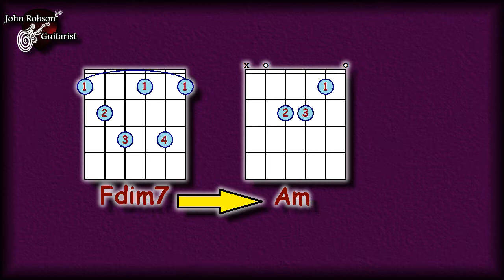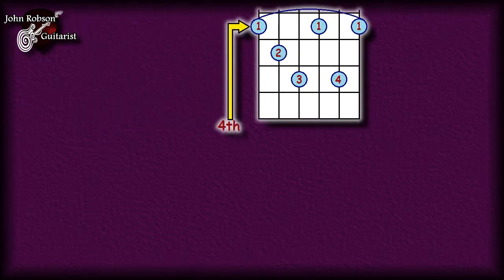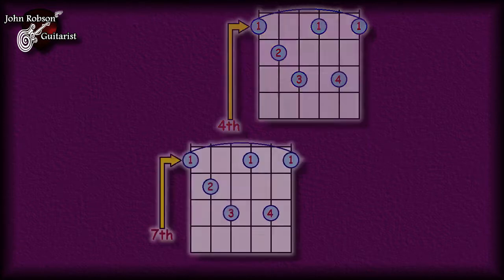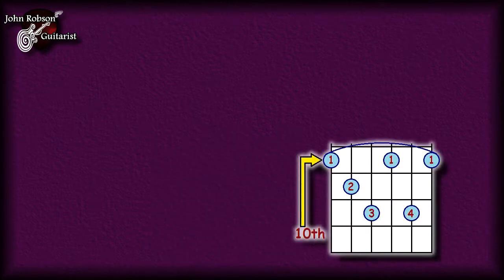In much the same way that augmented chords repeat themselves as they move up the neck, so do diminished seventh chords — the only difference is that diminished seventh chords move in three-fret stages. So you can take this F diminished seventh from the first fret, move it up three frets to the fourth fret and it's still an F diminished seventh, up another three frets to the seventh fret — still an F diminished seventh — and up to the tenth fret, still an F diminished seventh.